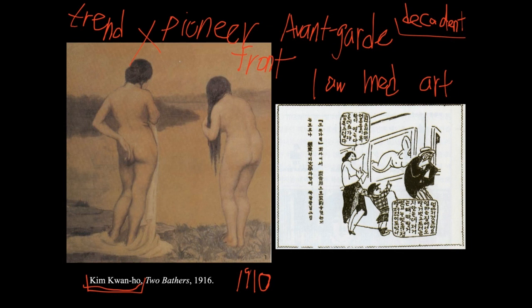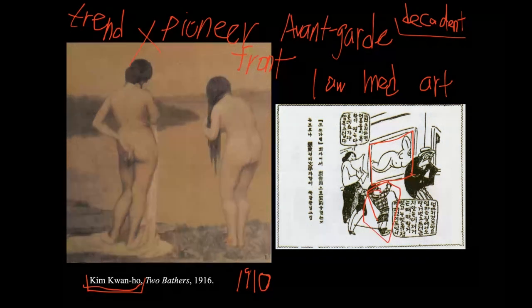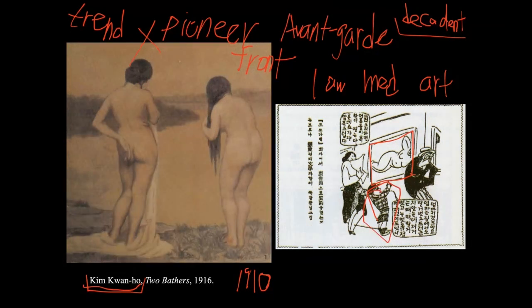There is a newspaper article — more like a caricature — depicting the public reaction. What it says is that a boy and his mother went to an art exhibition and there was a reclining nude. The boy said, just like any typical newspaper reader would react: 'Mom, look at this — there is a naked lady lying down. Why did she take off her clothes?'